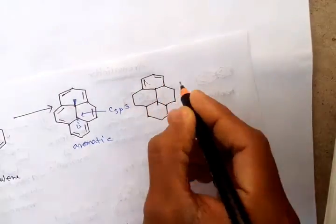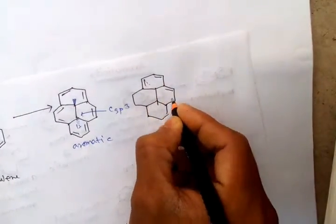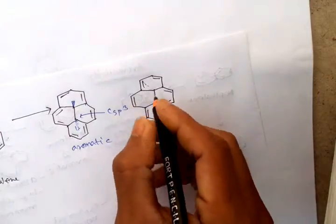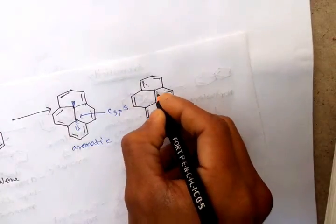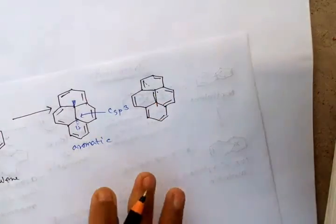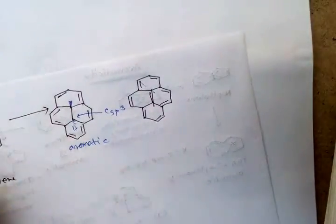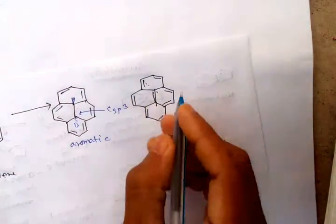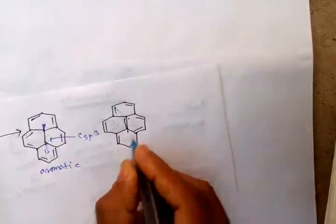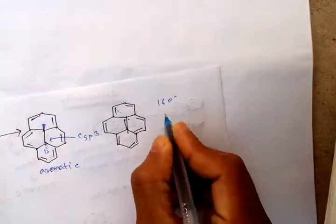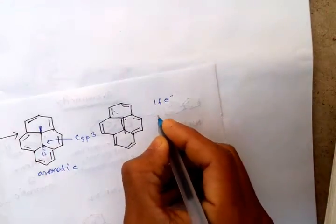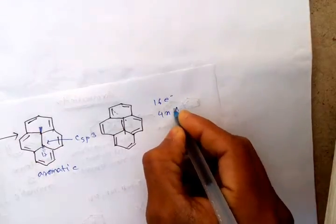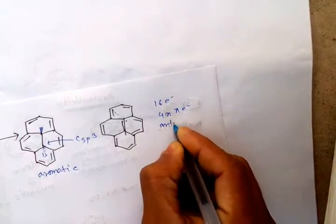Another more interesting system is a derivative of benzene. It has double bonds here, here, here, and here — also one more double bond. There are 16 electrons in the system, which is a multiple of 4, so it might seem anti-aromatic.